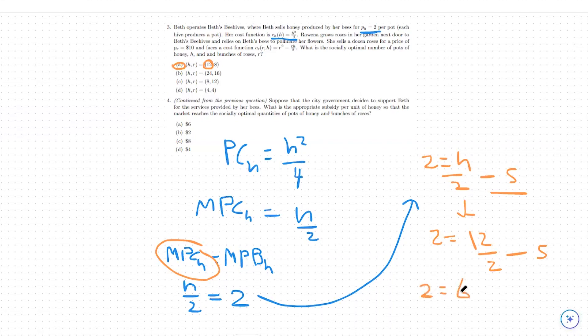So from there, we can say 2 equals 6 minus S. We can do a little bit of rearranging and the subsidy that we should implement as the government is $4. So we should do a $4 per honeypot subsidy, essentially stimulating the production of honeypots. If the government hands $4 to honeypot makers each time they produce another honeypot, then they will produce more honeypots, which is going to be the socially optimal level that we're looking for. Thank you.